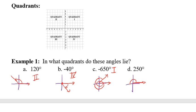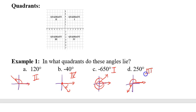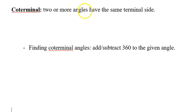Finally, 250 degrees is positive, so we go counterclockwise. Half the circle is 180, and the next line is 270, so 250 has to fall between those two — the terminal side ends up in quadrant three.